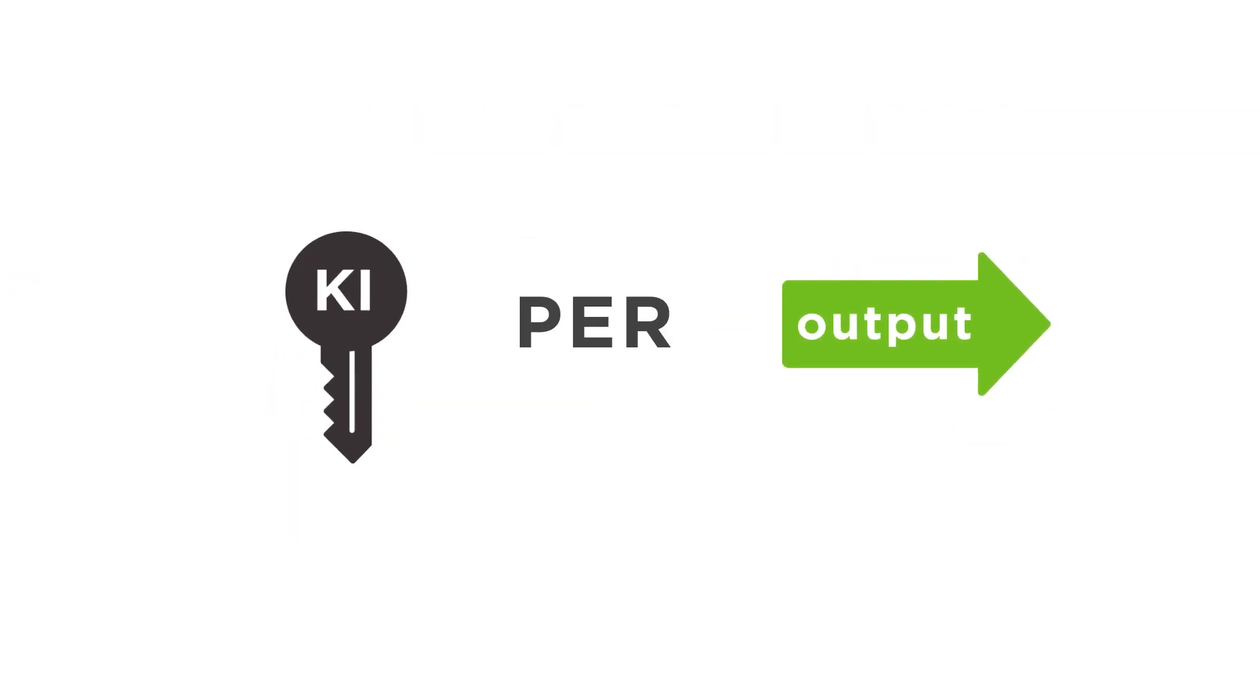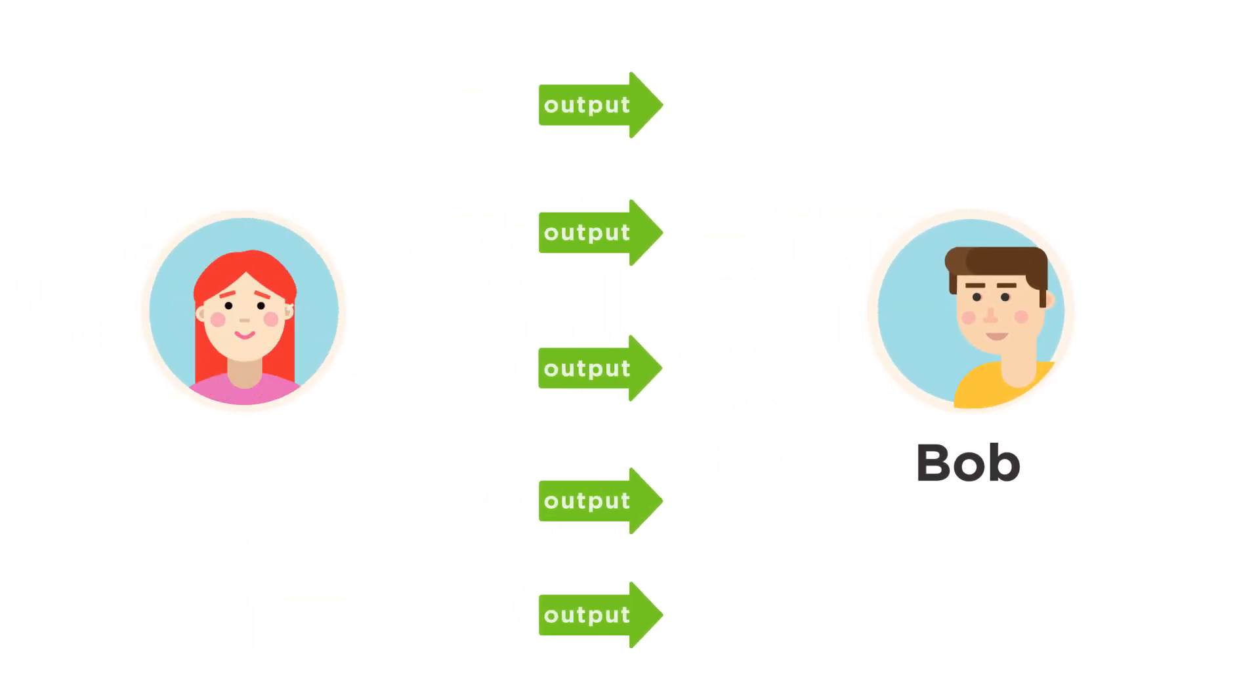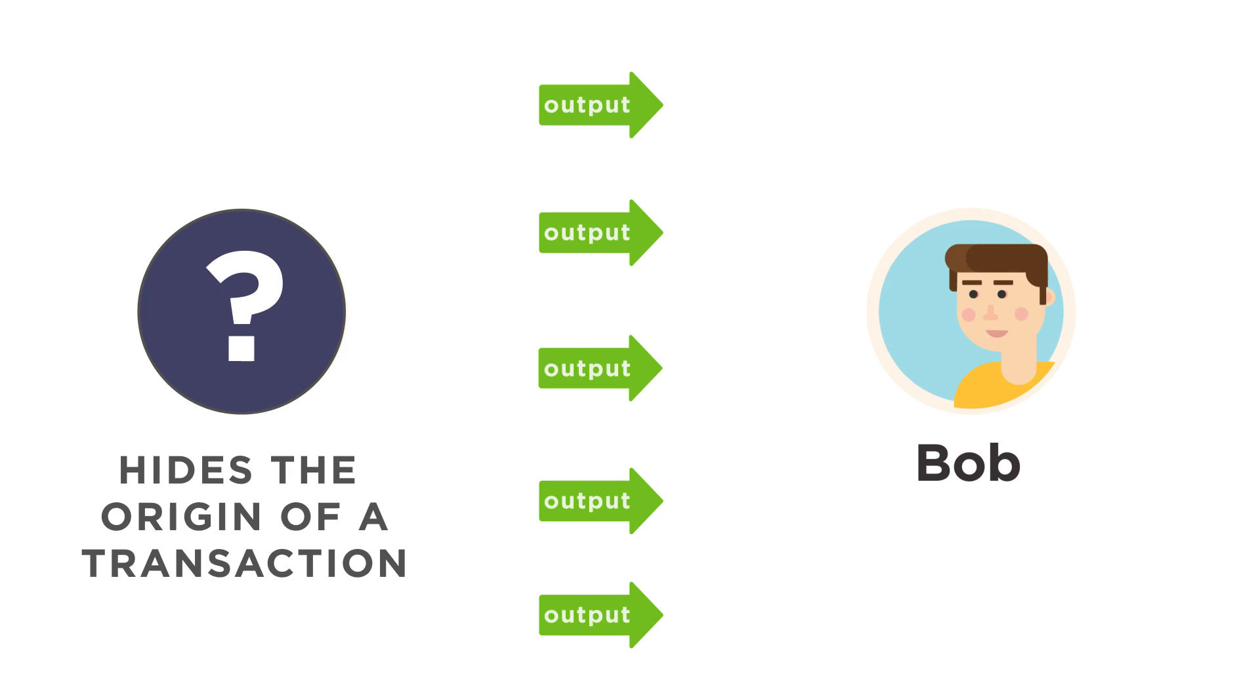Ring signatures ensure privacy of the sender, since inputs are untraceable. To increase the privacy of both parties in a transaction, Ring CT was implemented to hide transaction amounts.